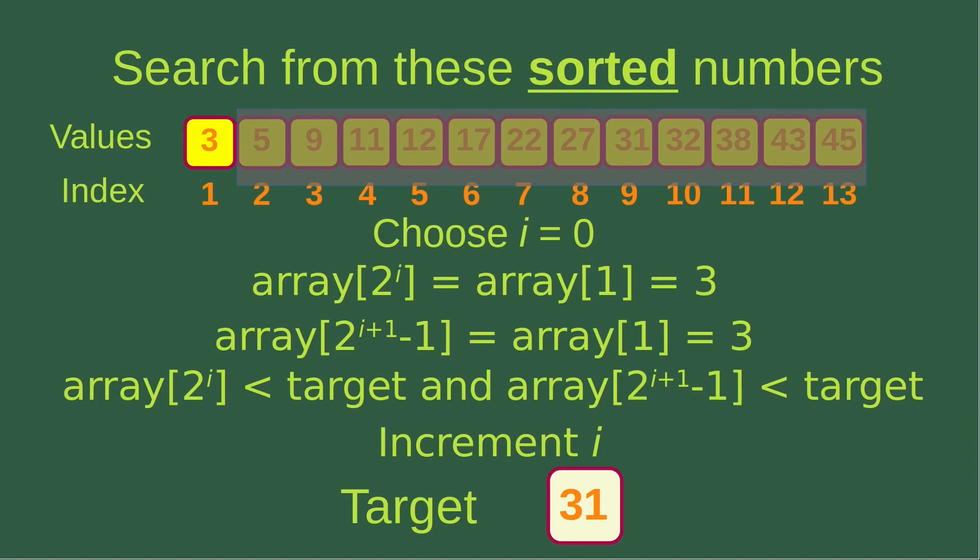First we start with i equals 0. The array element at index 2 to the power of 0 is array[1], which is equal to 3. We also check the index 2 to the power of i plus 1 minus 1; since i is 0, this index is also equal to 1, so both numbers are equal to 3. We can see that both numbers are smaller than the target, which is 31, so we can increment i to check for another interval.